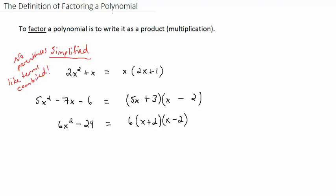Now on the right side, however, you notice this is x times (2x + 1). It's a product, it's multiplication. So this polynomial on the right side is called factored.